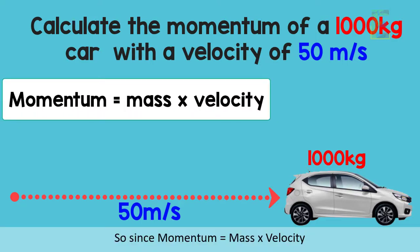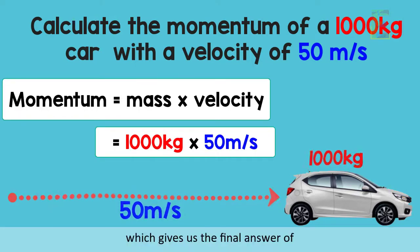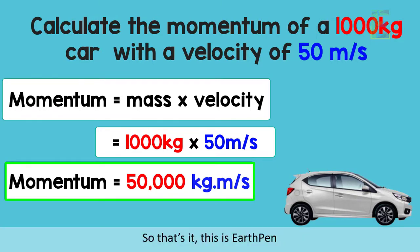Since momentum is equal to mass times velocity, momentum equals 1000 kilograms times 50 meters per second, which gives us the final answer of 50,000 kilograms meter per second. So that's it. This is Earth Pen Learning. Learning has never been this easy for anyone, anywhere.